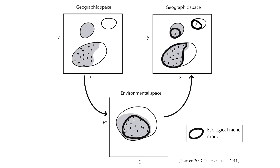So, back to our original diagram. How can we use these kinds of predictions to accelerate the discovery of species unknown to science, and also accelerate the discovery of new populations so we know more about the distributions of species we already know about? This is addressing both the Linnaean and Wallacean shortfalls.